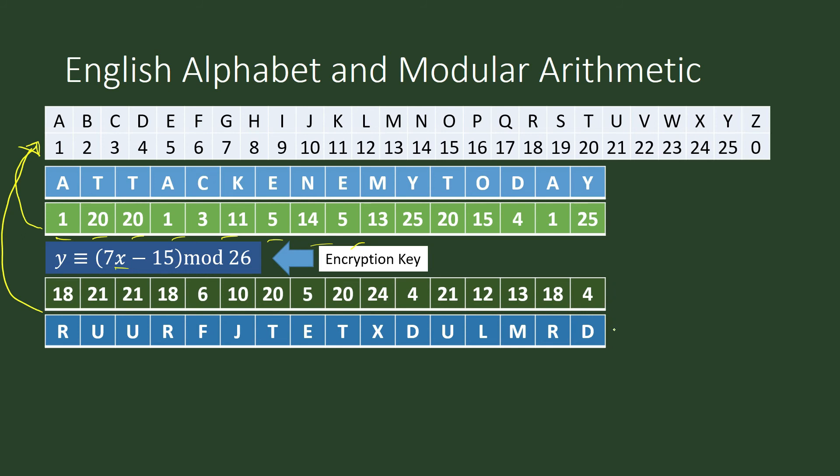Your squad leader, who is stationed in the field and ready to attack, will receive the secret message. He has no way of knowing what is the message behind this secret code. So your squad leader should have a decryption key. This is the decryption key: X is congruent to 15 times Y plus 15 modulo 26. He will apply the decryption key to the numeric equivalent of the ciphertext, and it will produce this.